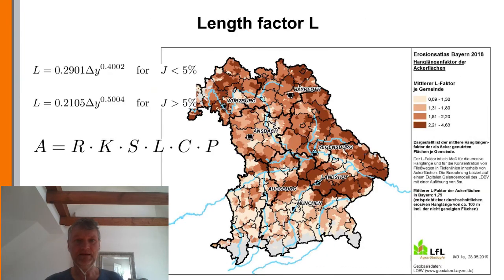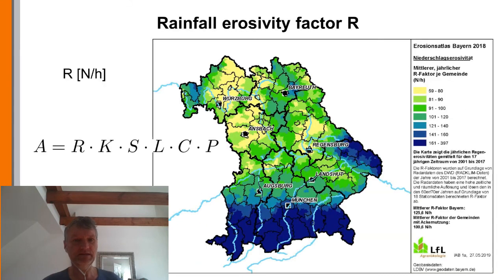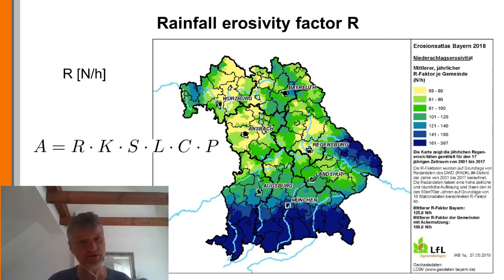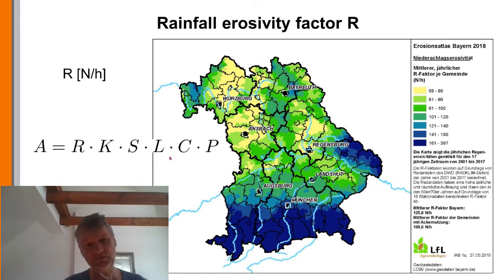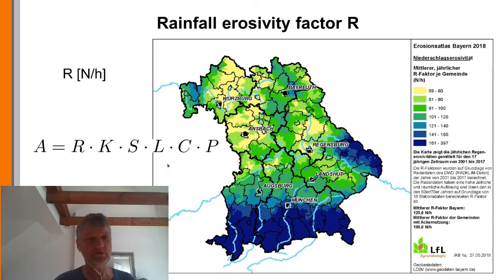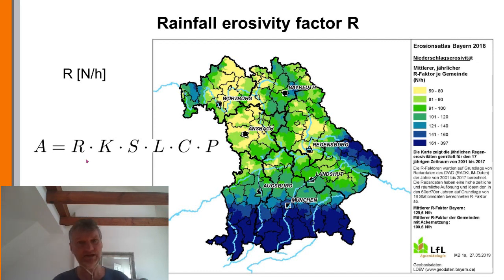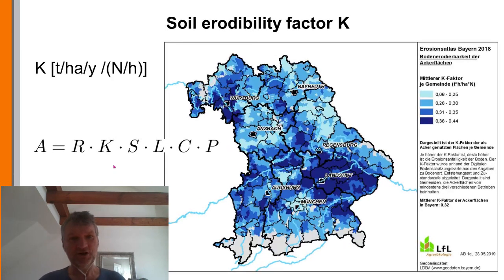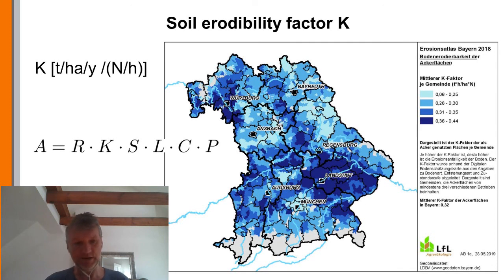In summary, soil erosion using the Universal Soil Loss Equation can be calculated quite easily when all data are available. The slope factor can be obtained from a digital terrain model using a formula, and the length factor from average field lengths in the catchment area. The most critical factors still to be explained are the rainfall erosivity factor R and the soil erodibility factor K, which will be covered in the following lectures. Thank you very much.